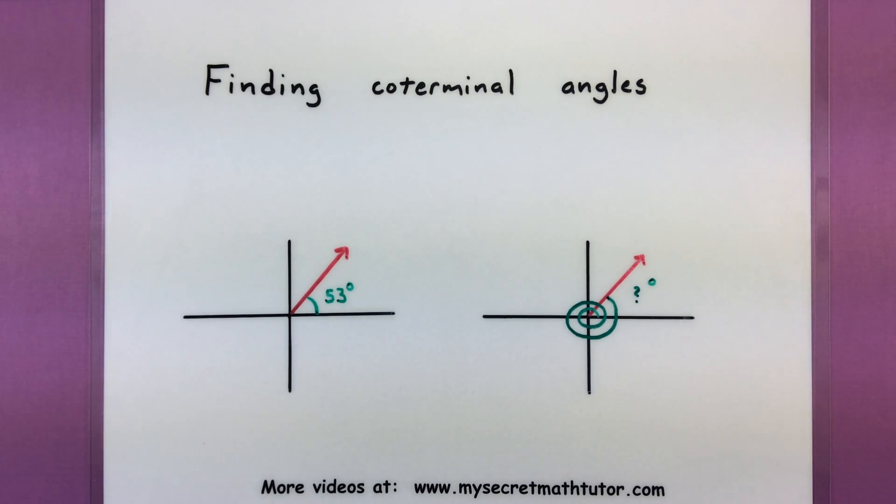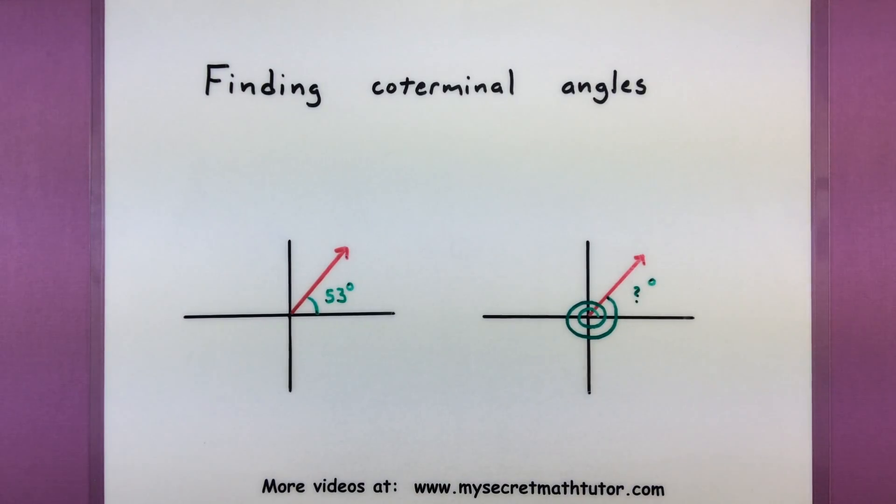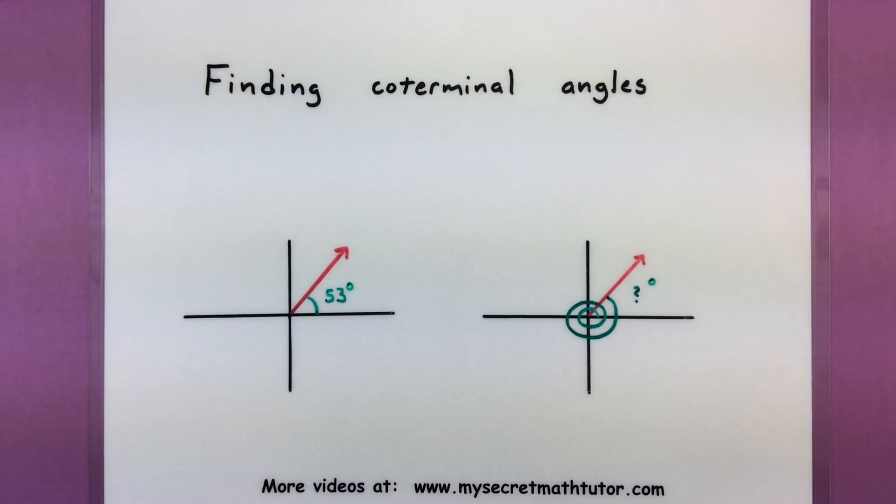Hello and welcome to My Secret Math Tutor. For this video we want to work on finding coterminal angles. In case you don't know what that means, essentially a coterminal angle is another angle that has its terminal side in the same spot. Here I have a quick example of two coterminal angles and sure enough you can see that angle stops in the same spot.